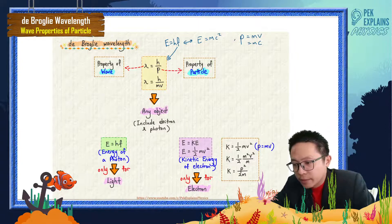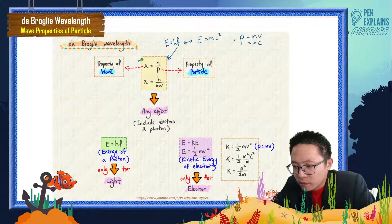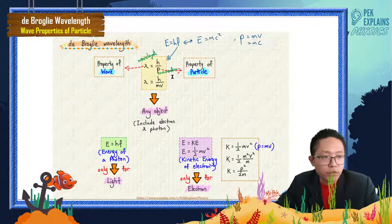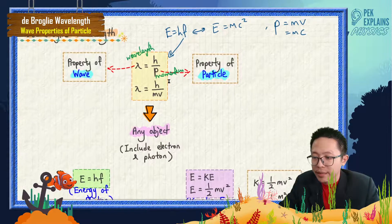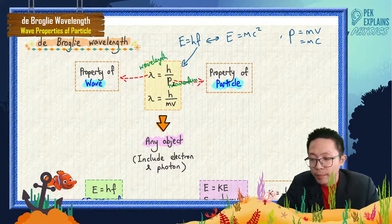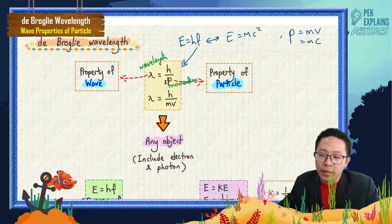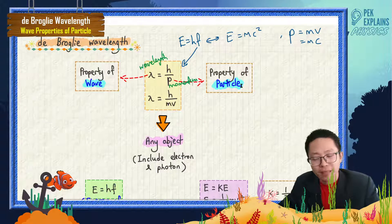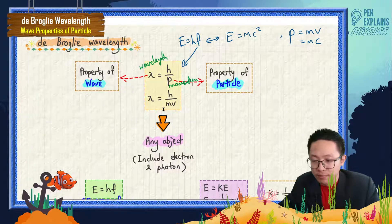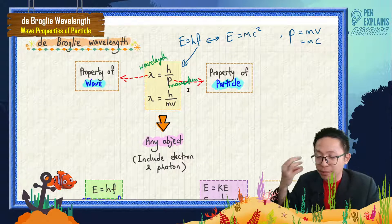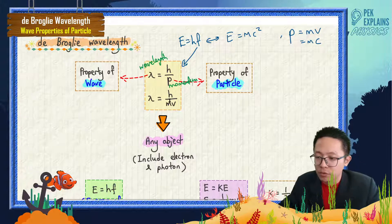Lambda here is the wavelength, and p is the momentum. The momentum formula is mass times velocity. Wavelength is definitely a property of a wave, while momentum is definitely a property of a particle, because only a particle has mass.